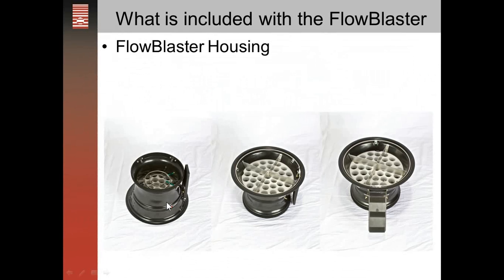Looking at the Flow Blaster housing — if you look inside, you see the flow sensors. There are two flow sensors: one for measuring supplies and one for measuring returns. If we flip it over, we see the side that has the flow straightener and flow conditioner. There's also a gauge board to attach the DG700 gauge with velcro, and it's hinged so you can adjust it to read the DG700.